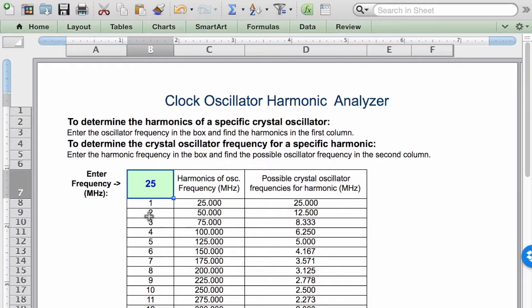The first way is to enter in a crystal frequency in the green cell as noted. In this case, we've entered 25 megahertz. You can see in this middle column the list of harmonics that are related to that 25 megahertz crystal.